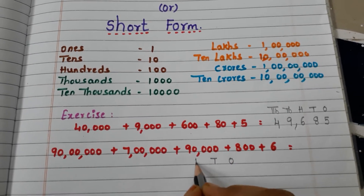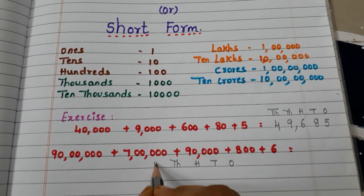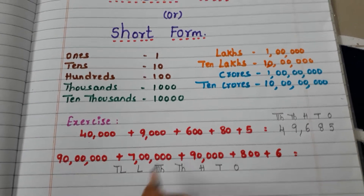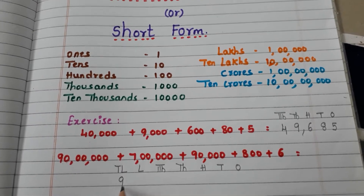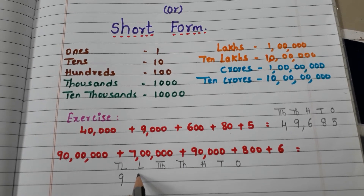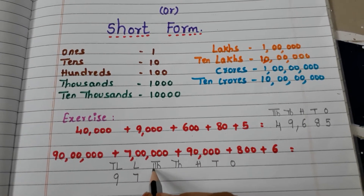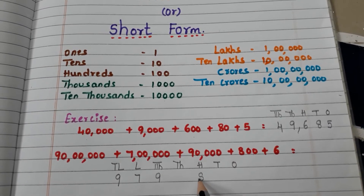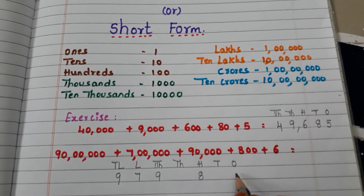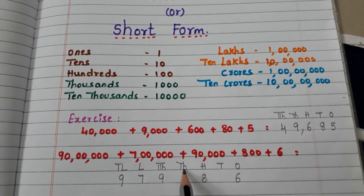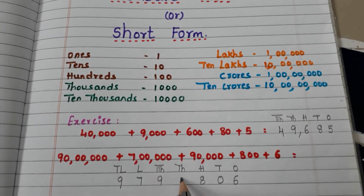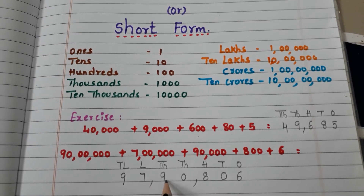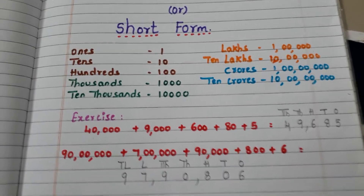Ones, tens, hundreds, thousands, ten thousands, lakhs, ten lakhs. Ninety lakhs means in the ten lakhs place we write 9. Seven lakhs — in the lakhs place we write 7. Ninety thousands — in the ten thousands place we write 9. Eight hundred — in the hundreds place we write 8. Six ones — in the ones place we write 6. For thousands and tens place we have to write 0. So the number is 97,90,806.